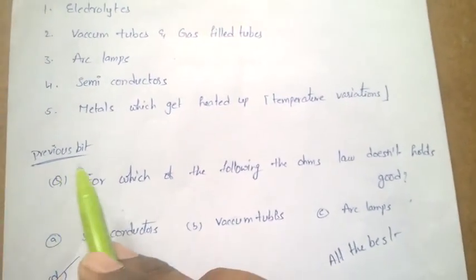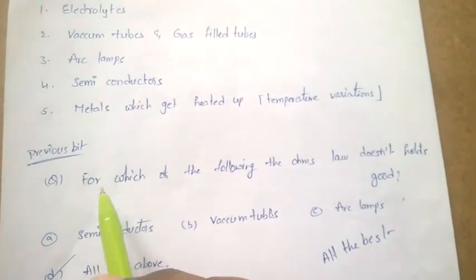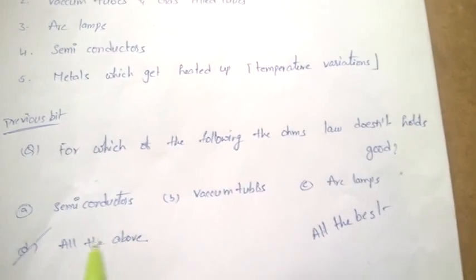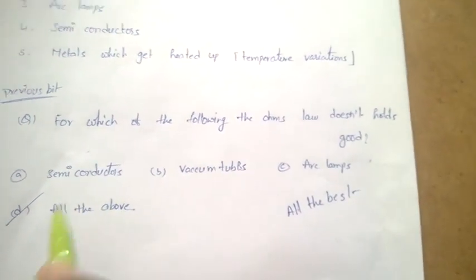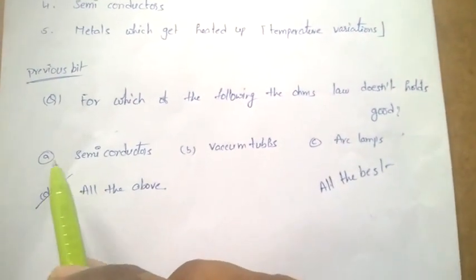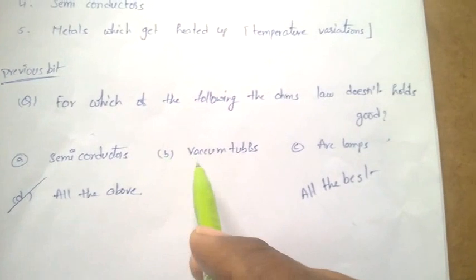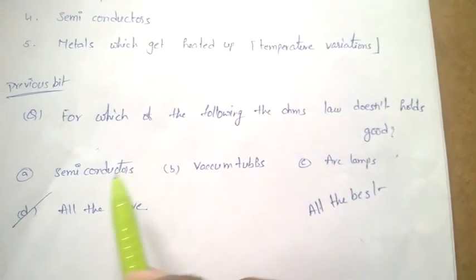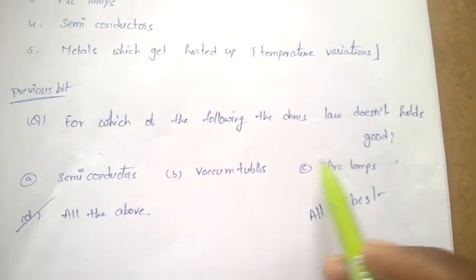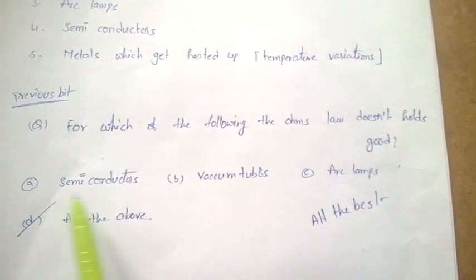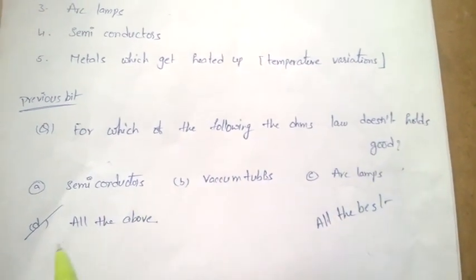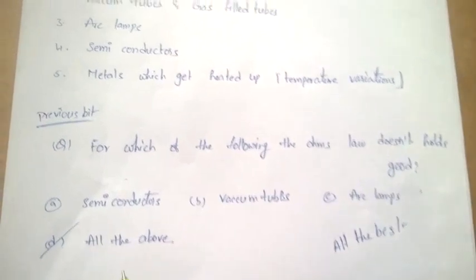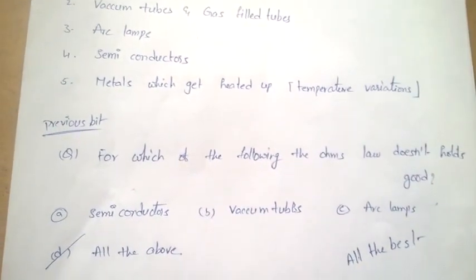One previous bit asked in the TTA exam is: for which of the following does Ohm's law not hold good? Options given are semiconductors, vacuum tubes, and arc lamps. For all these, Ohm's law does not apply, so the answer is all of the above.